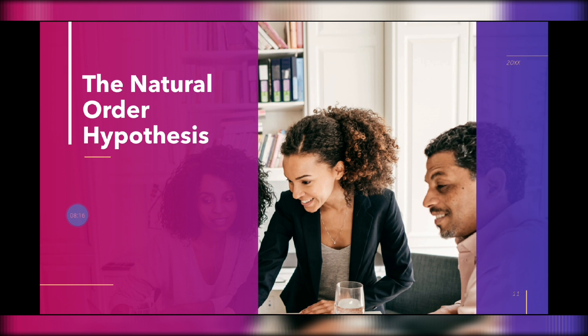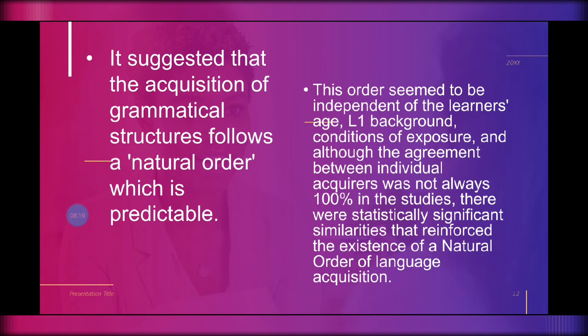Finally, we have the Natural Order Hypothesis. It suggests that the acquisition of grammatical structures follows a natural order which is predictable. This order seems to be independent of the learner's age, L1 background, and conditions of exposure. Although agreement between individual acquirers was not always 100% in the studies, there were statistically significant similarities that reinforced the existence of a natural order of language acquisition. It really depends on the learners — one learner's pace of learning is different from another.